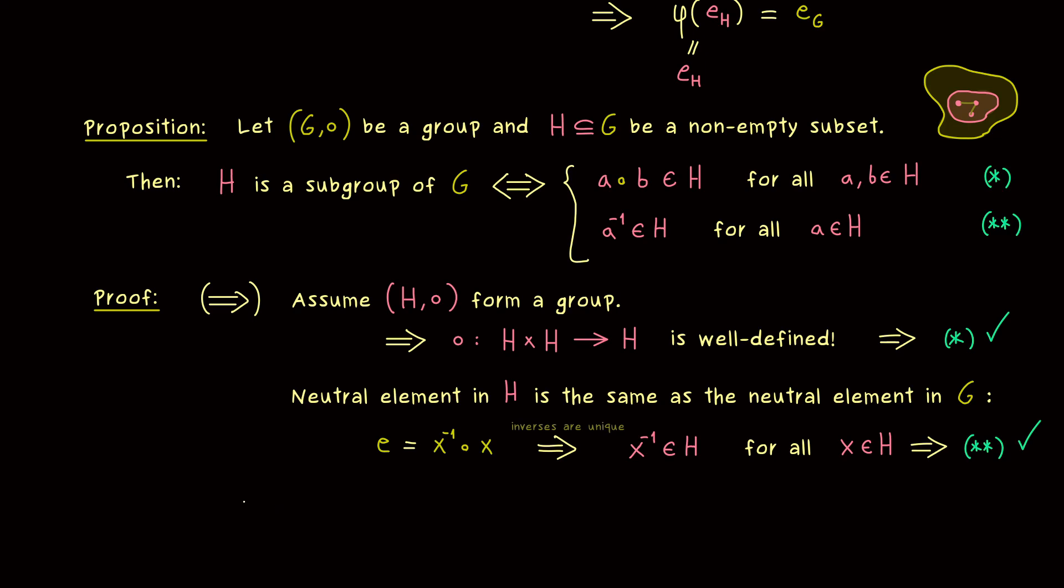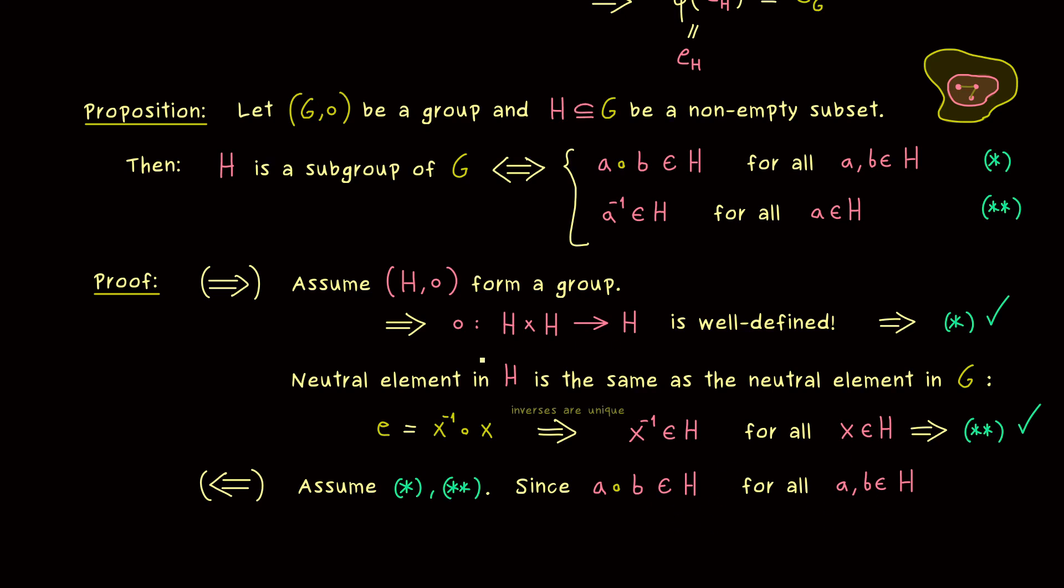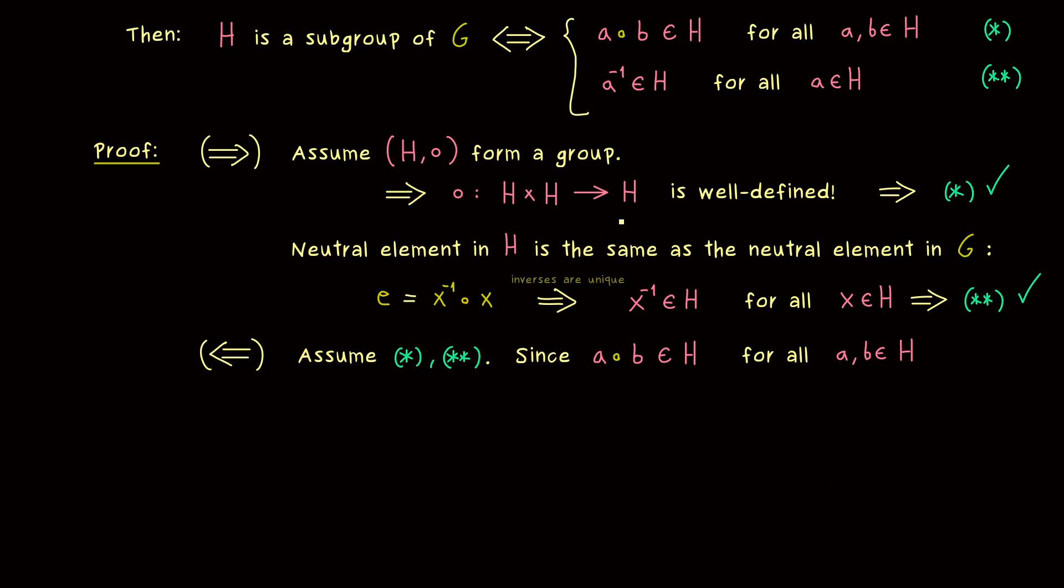Okay, maybe this was the simpler direction. So let's go through the other implication. So here we just assume that H is just a subset. But the two properties star and two star are satisfied for it. And in the first step here we can do the same as before, just in the other direction. So if we know that a with b lies in H for every a and b, the binary operation is well defined on H. This is very good, because it's necessary. A group needs a binary operation, which is also associative.